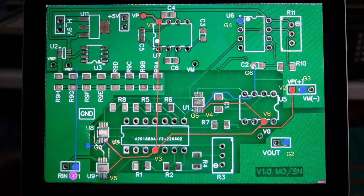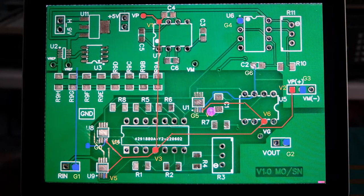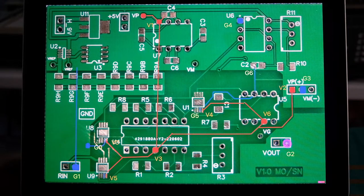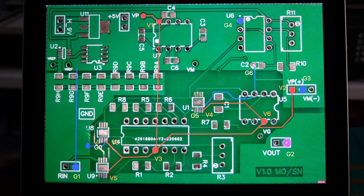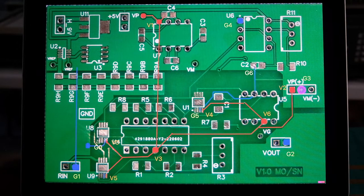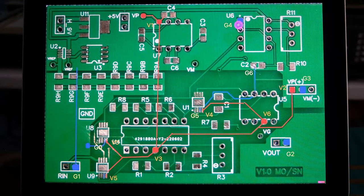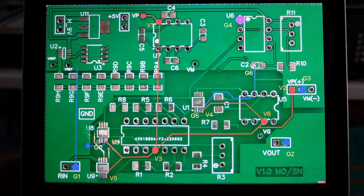So G1 is this point here. And then we have G2 which is another ground plane connection here at the output of the milliohm meter. G3 is a probe point.